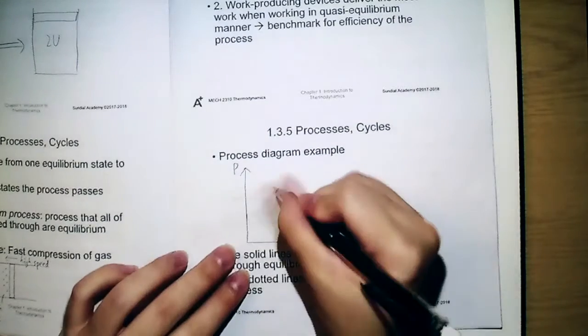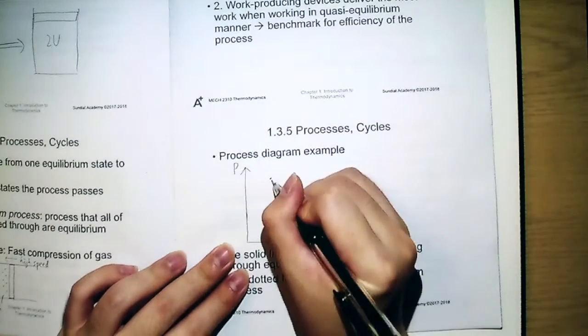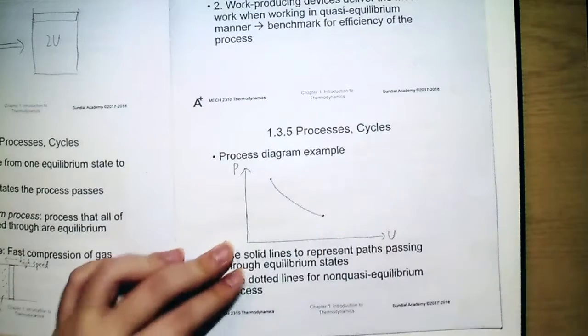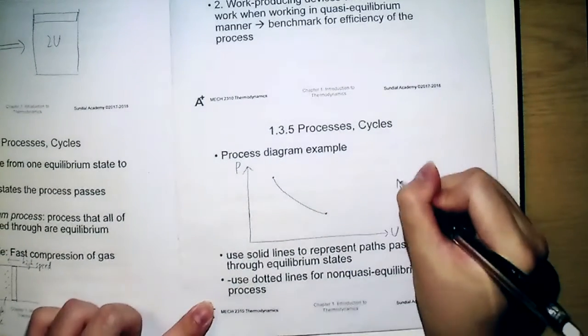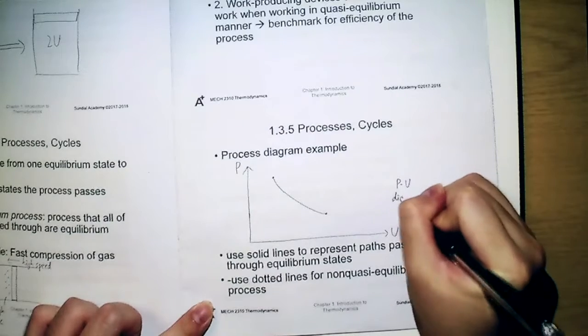A typical example would be something like this. So this one is called a PV diagram.